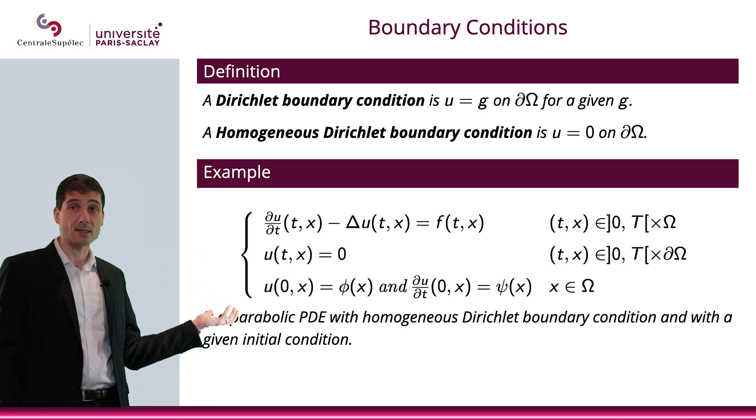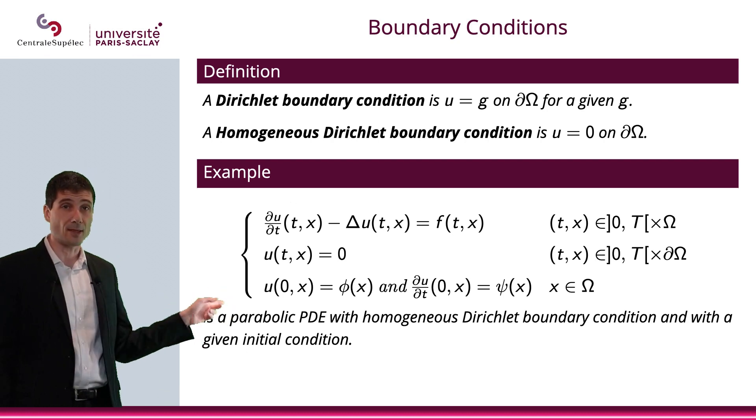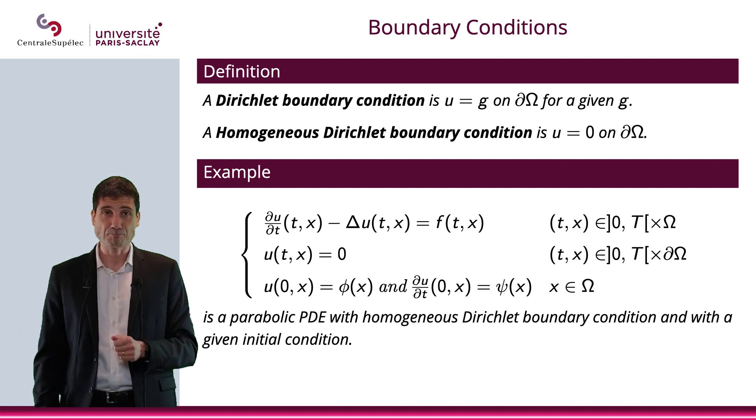That will be a parabolic PDE with homogeneous Dirichlet boundary condition and a given initial condition. Now, I can just rewrite this way. It's just easier by just writing Tx equals 0 and then actually writing the sets this way.